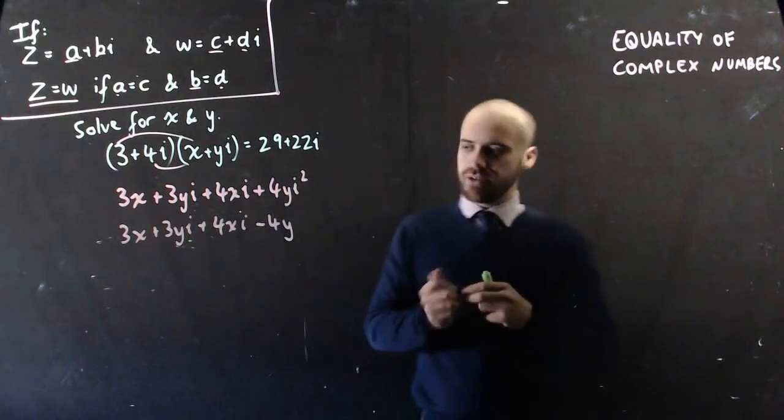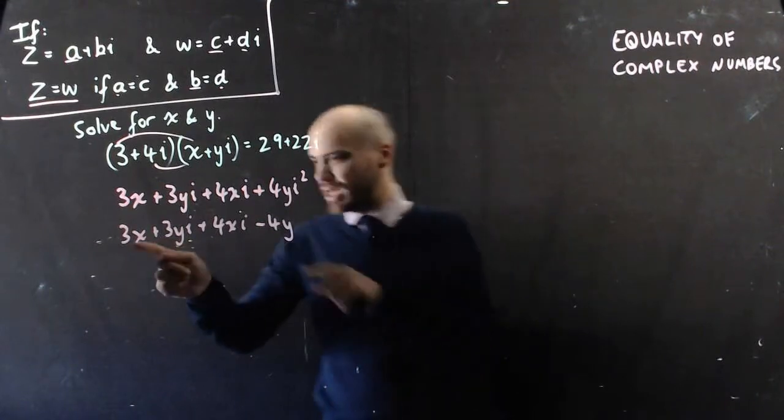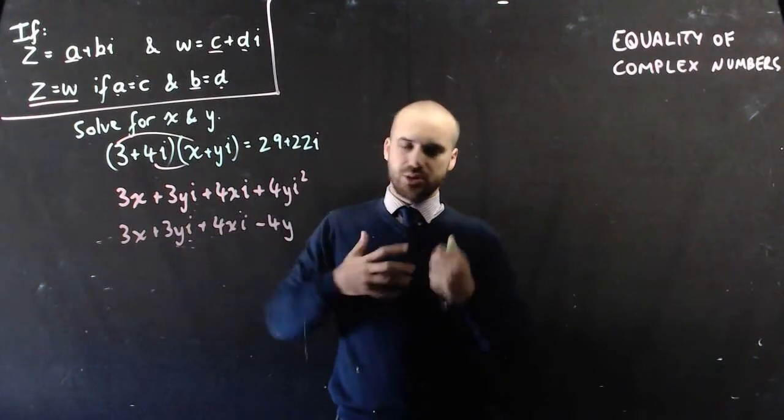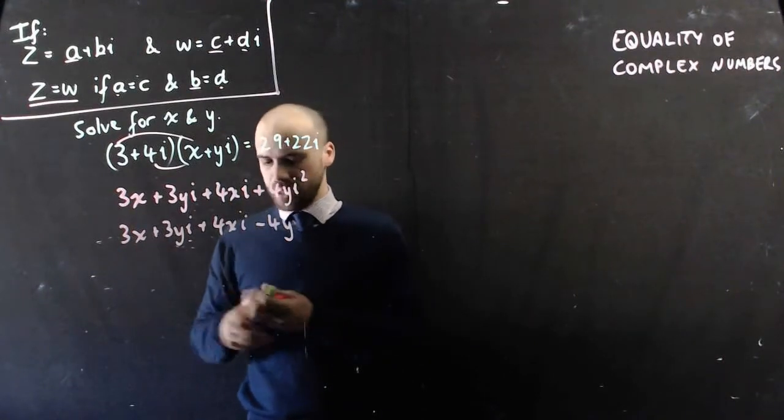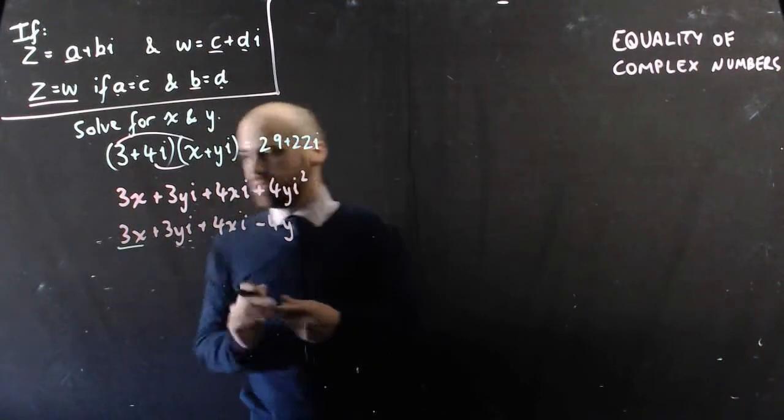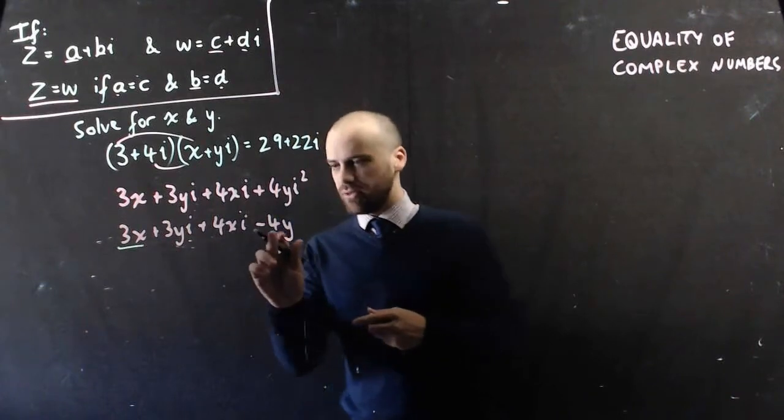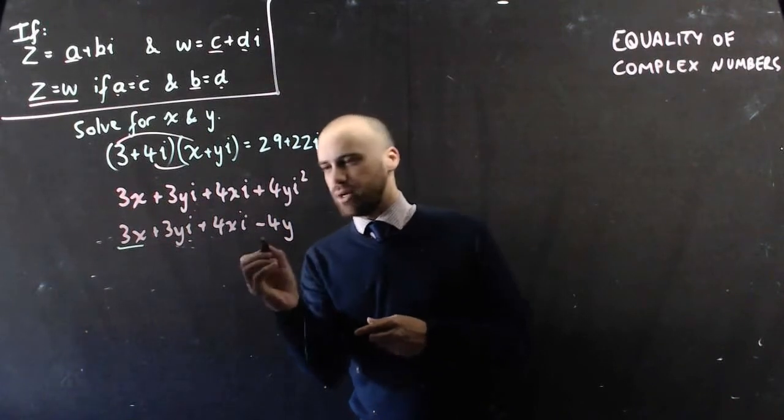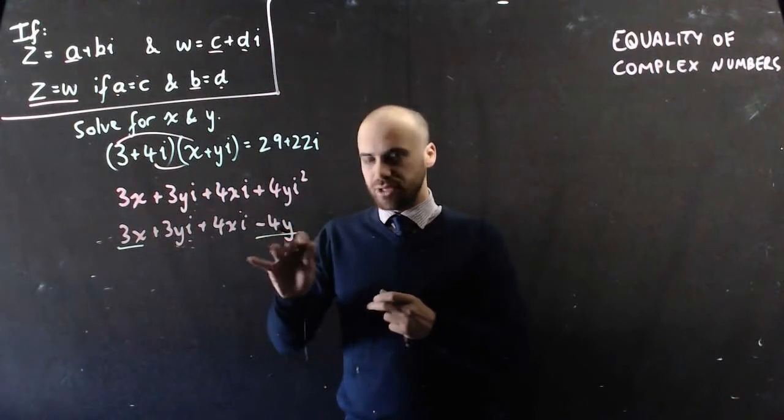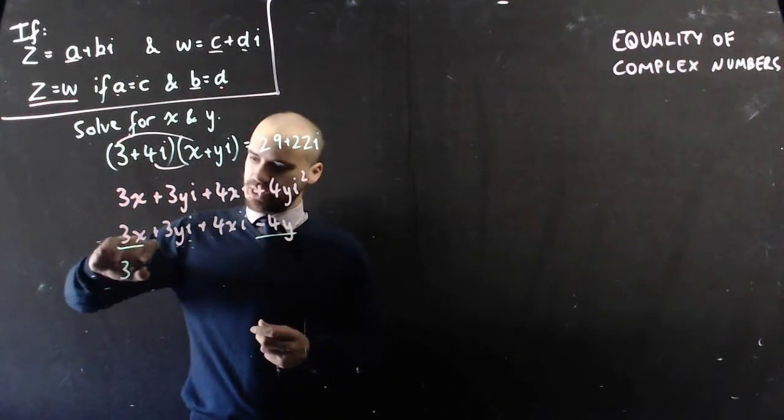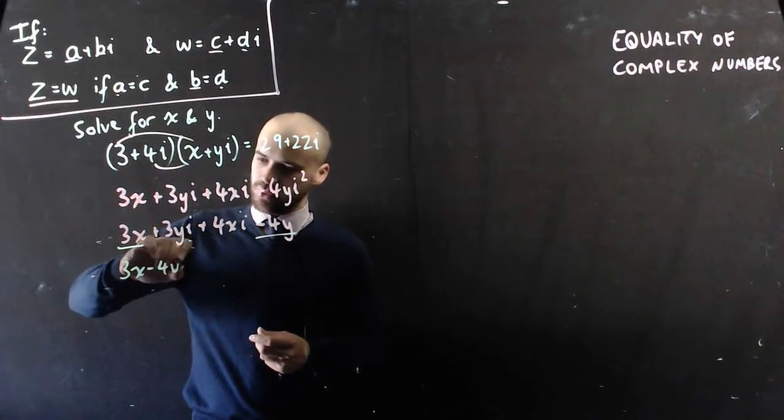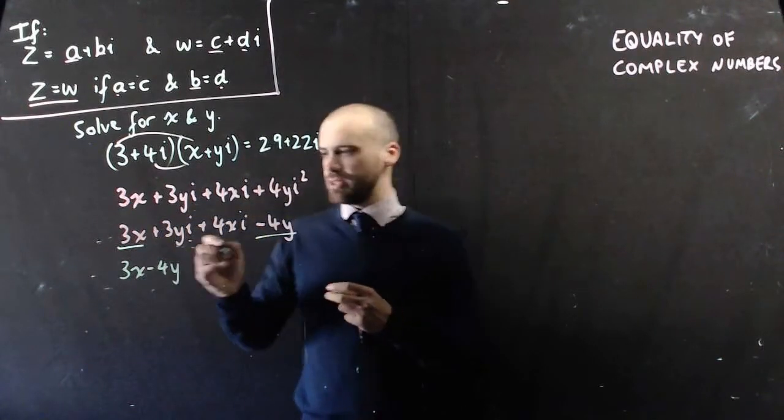Very important here to understand that x and y are numbers. They can just be treated as numbers. So that's 3 times a number, which means that's a real component. That's negative 4 times a number, which means that's a real component. I'm going to group them together. I'm going to say that 3x - 4y, that's the real component of this.